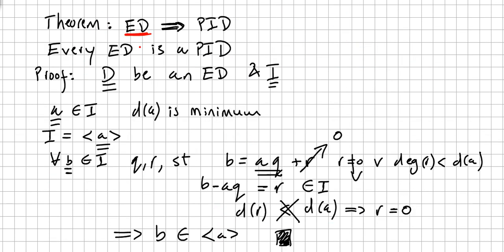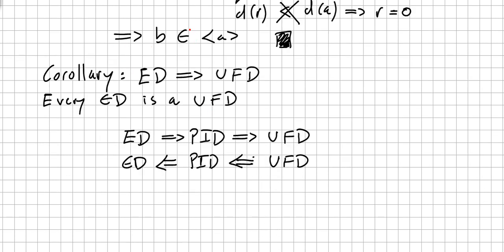After that, in the previous video we saw a theorem that says every Euclidean domain is a principal ideal domain, and we proved that. Now in this video we are going to see a corollary of that previous theorem.